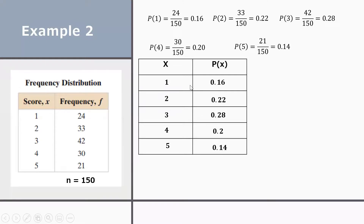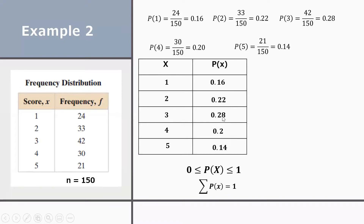Let's verify the two properties for discrete probability distribution. First, all probabilities are between 0 and 1 — no negative values, none greater than 1, so property one is satisfied. Second, the sum: 0.16 + 0.22 + 0.28 + 0.20 + 0.14 = 1. Both properties are satisfied.